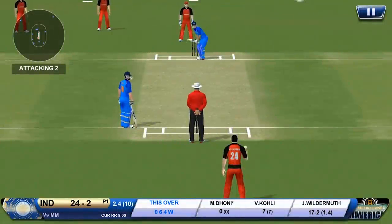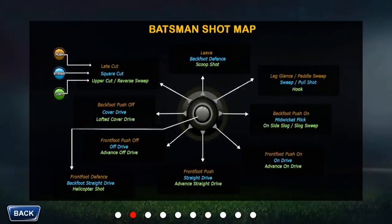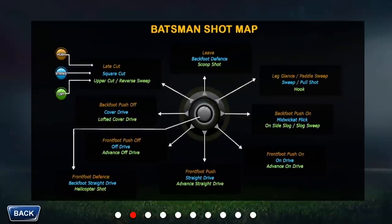Now I'll show you how to play with the legacy swipe controls. The legacy swipe works similarly to the joystick controls — instead of moving your cursor to the desired direction and pressing the button, all you need to do is first select the shot you would like to play, choose the associated button, and then when the bowler is about to bowl, swipe in the direction in which that particular shot is mapped for the joystick.